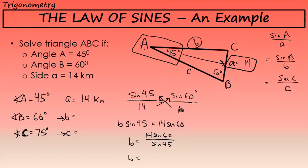It's always important to know how precise your answers need to be. In this problem, I will round each of my answers for the lengths of sides b and c to one decimal place. Side b is 17.1 kilometers.